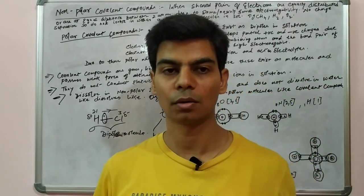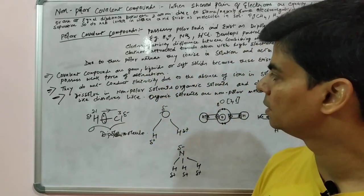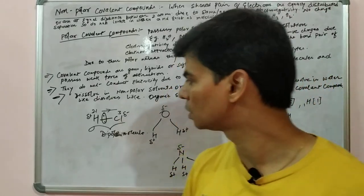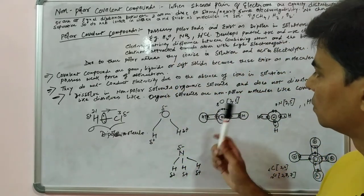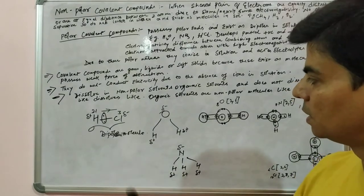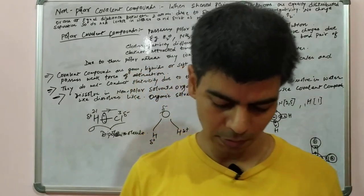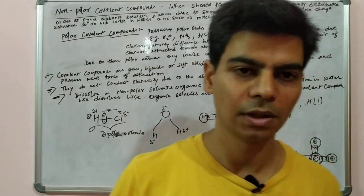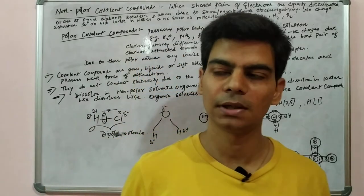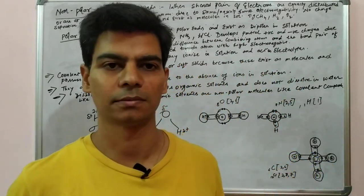I hope this cleared your concept of covalent compounds — what they are, their types (polar and non-polar), how they conduct electricity, how they ionize in water, and the concept of dipoles. Please go through all the examples we've learned. In the future lecture we will talk about coordinate or dative bonding.